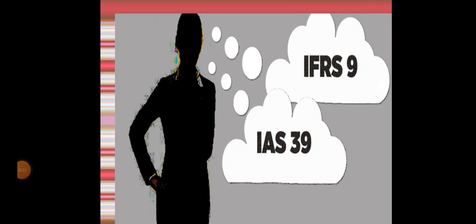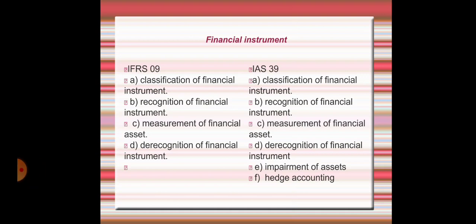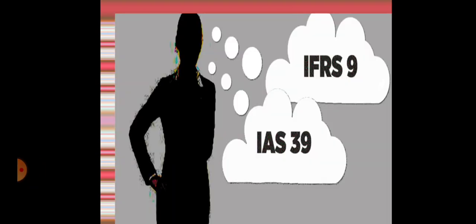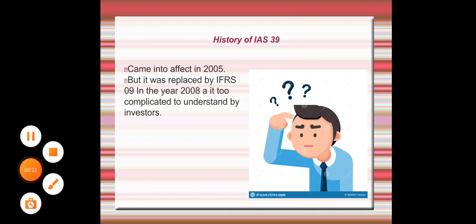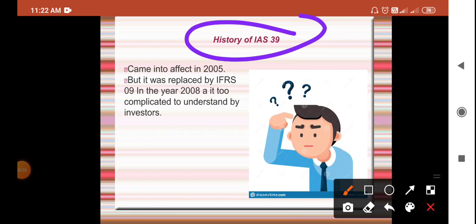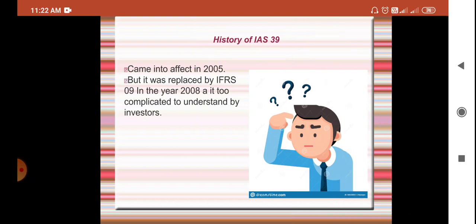In this video we are going to discuss some concepts relating to financial instruments. First, let's look at what is IFRS 9 and what is IAS 39. In the year 2005, IAS 39 came into existence. Later, as it was very difficult to be understood by investors, it was replaced by IFRS 9 with some simplicity and simpler definitions of the concepts.